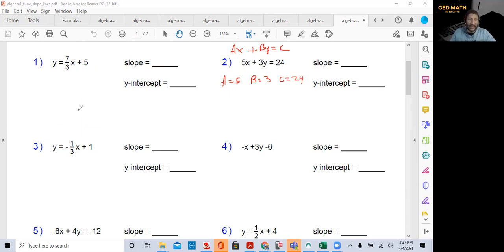So I've seen problems on the GED where they say minus three y plus two x equals six. No, that is not standard form. Standard form is ax. So two x minus three y equals six. This is standard form.